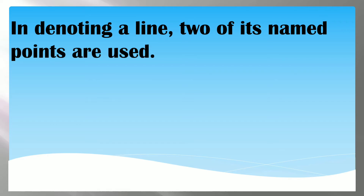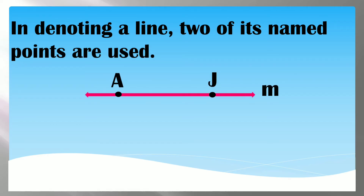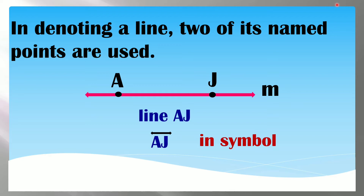In denoting a line, two of its named points are used. The name of this line is Line AJ, or we can call it Line M. We can name it using two points or a small letter.